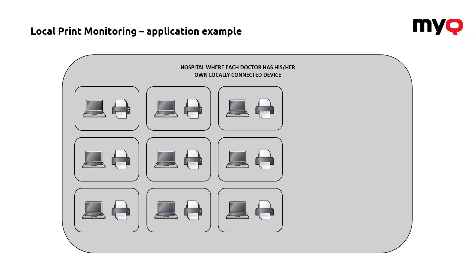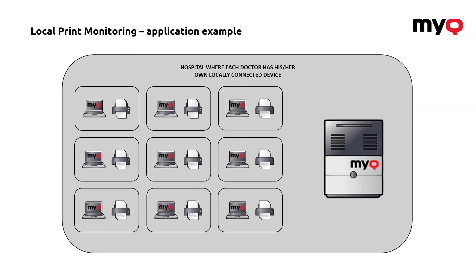For a real-world application example: imagine a hospital where each doctor has their own office with a small desktop printer connected by USB. That means a lot of machines to maintain, with no visibility into how many pages are printed. If you want to do an analysis to replace those machines, this application is very handy. You install the MyQ server in the background and install the application on every doctor's computer. It automatically collects the data, and in MyQ server you get central reporting for all those small USB machines.